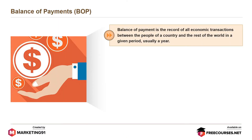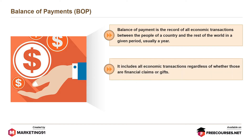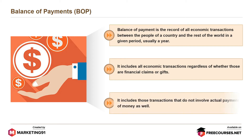Balance of payment or BOP is the record of all economic transactions between the people of a country and the rest of the world in a given period, usually a year. It includes all economic transactions regardless of whether those are financial claims or gifts. It includes those transactions that do not involve actual payment of money as well.